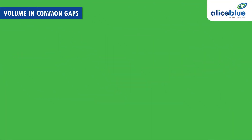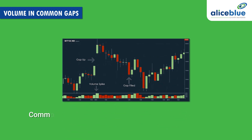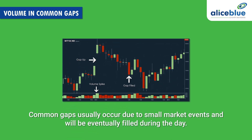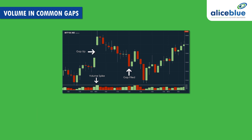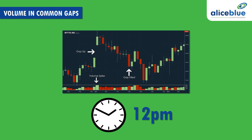Volume in Common Gaps: As you have already learned, common gaps usually occur due to small market events and will eventually be filled during the day. Refer to this image. You can see that there is a huge buying volume on the gap up candle, but the next consecutive candles have selling volume, hence indicating that the gap will be eventually filled during the day. As anticipated, at around 12 pm, the stock price reached its previous day close and filled the gap.